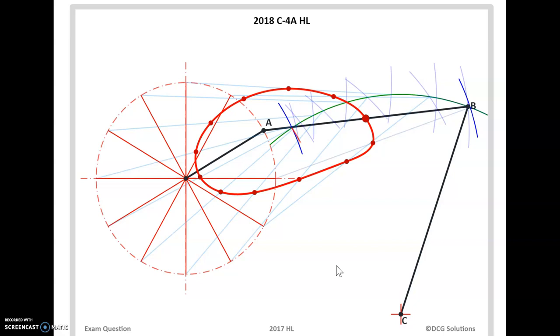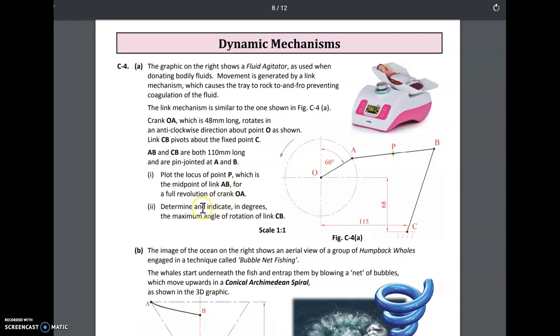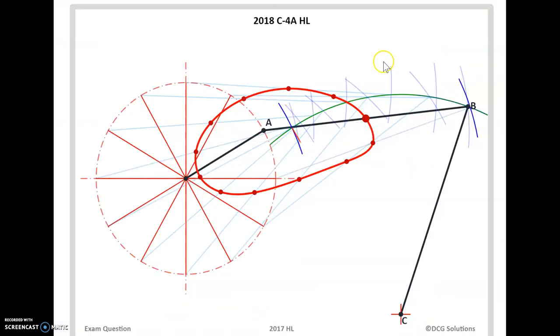The next thing is the angle of inclination. That's part A answered. Part B asks us to determine in degrees the maximum angle of rotation of CB. CB is moving from here; the furthest distance is on the right-hand side, but it comes over here to the left-hand side. So we need to look at which point is the furthest over. This one here is the furthest over point, so that's the angle of inclination. The furthest over on the left and the furthest over on the right is our angle of inclination.